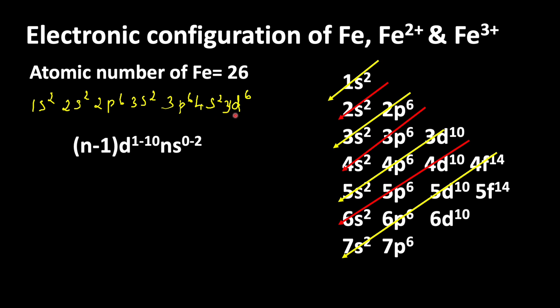It means first we write the 3d orbitals, then after that we are writing 4s orbital. So we need to change the electronic configuration to 3d6 then 4s2. So this is the electronic configuration of iron.